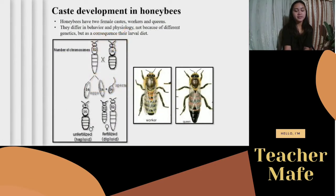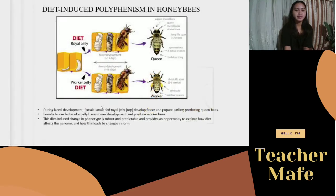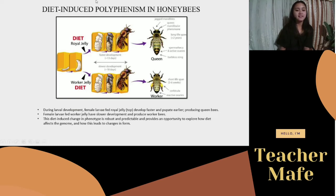These diploid female honeybees with 32 chromosomes can either become a worker or a queen. The development into a worker or a queen depends on what the larva is fed during larval development. If royal jelly is fed to the larva, it will have a faster development of 13 days and will develop into a queen bee. If worker jelly is fed to the larva, it will develop into a worker honeybee.